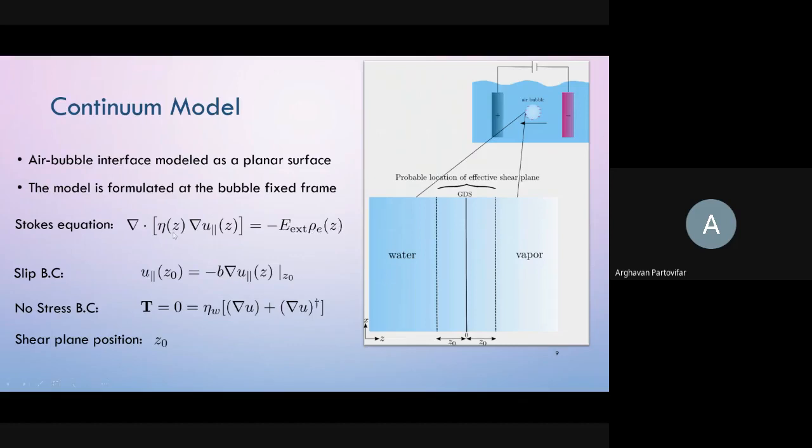The electrically driving fluid flow is governed by the Stokes equation, where eta is a viscosity profile across the interface, u is the velocity profile, E is external electric field, and rho_e is a charge profile obtained from the simulations. This equation is solved with slip and no stress boundary conditions in the bubble fixed frame, while the corresponding slip length and accurate position of the shear surface is treated as fitting parameters. Dividing the obtained velocity of a bubble by magnitude of external electric field, we can calculate the electrophoretic mobility of air bubbles.